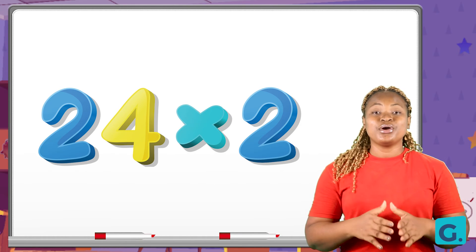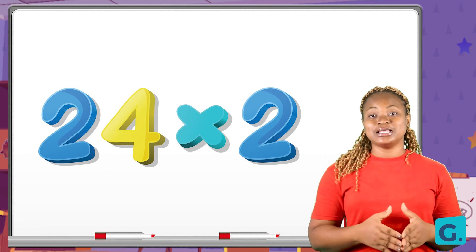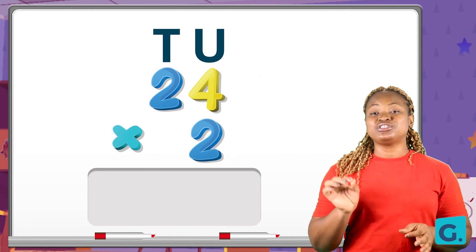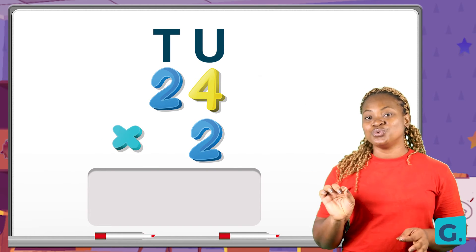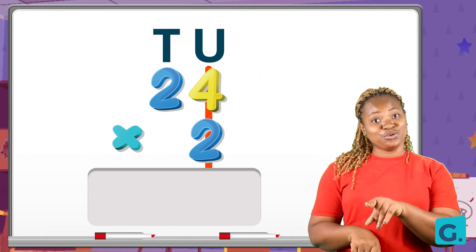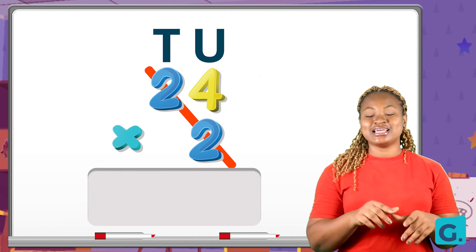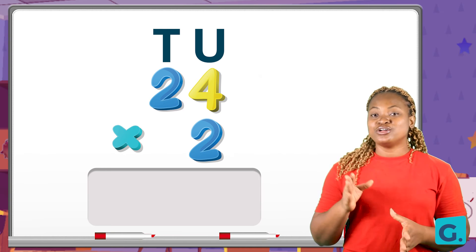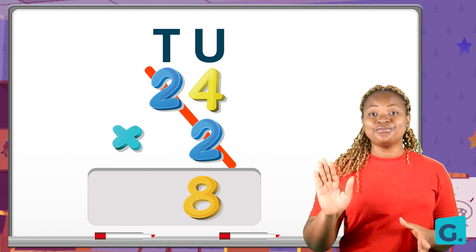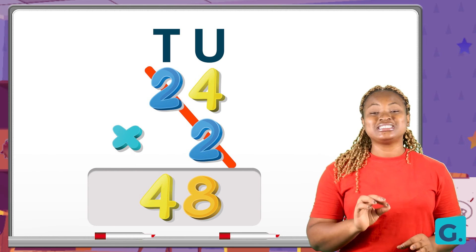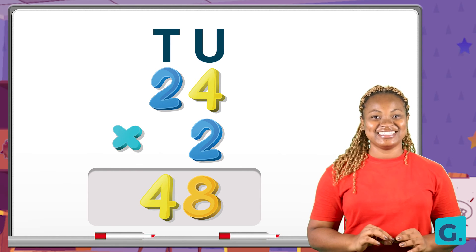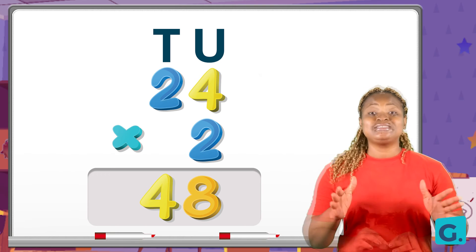Remember, we can arrange these numbers, and if we do that correctly we are going to have twenty-four times two. If you have solved this using our reading — unit times unit, unit times tens — you're going to have two times four equals eight, two times two equals four. So twenty-four times two gives you forty-eight. That's right!